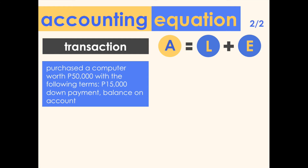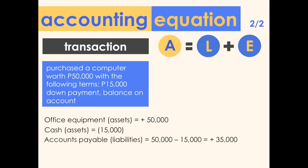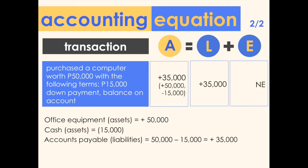Transaction five: purchased a computer worth 50,000 pesos — 15,000 down payment, balance on account. The company received a computer (office equipment), so there is an increase of 50,000 pesos in assets. There was also a down payment of 15,000 pesos — a decrease in assets. The remaining balance on account will be recorded as a payable, increasing liabilities by 35,000 pesos (50,000 minus 15,000). The net increase in assets is 35,000 pesos, and liabilities also increase by 35,000. Both sides are equal.